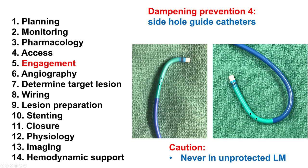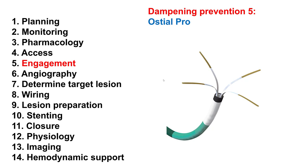Another option is to use side hole guides. Those guides should never be used in unprotected left main because they can cause a false sense of security — pressure appears to be okay from the side holes, but there can still be dampening and decreased perfusion that can be catastrophic in the left main. Also, even when side holes are used, there is still the possibility of dissection of the ostium if contrast is injected. Finally, another option is to use a device called the OstealPro that has four prongs that rest against the aortic wall and prevent the guide from entering deep into the ostium.